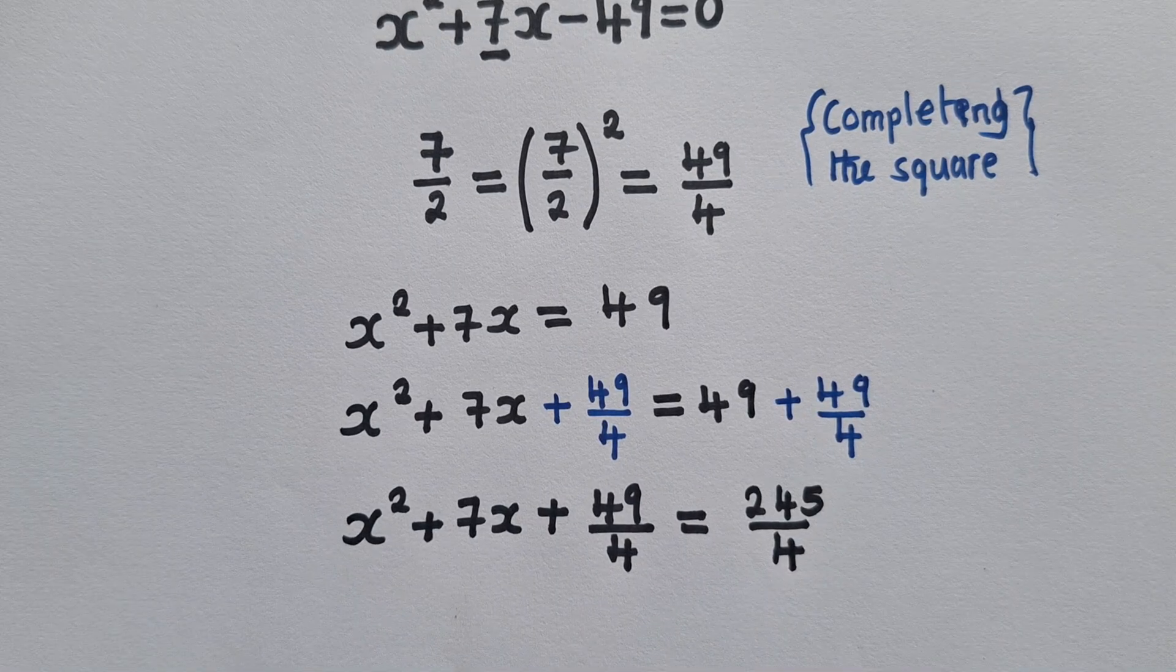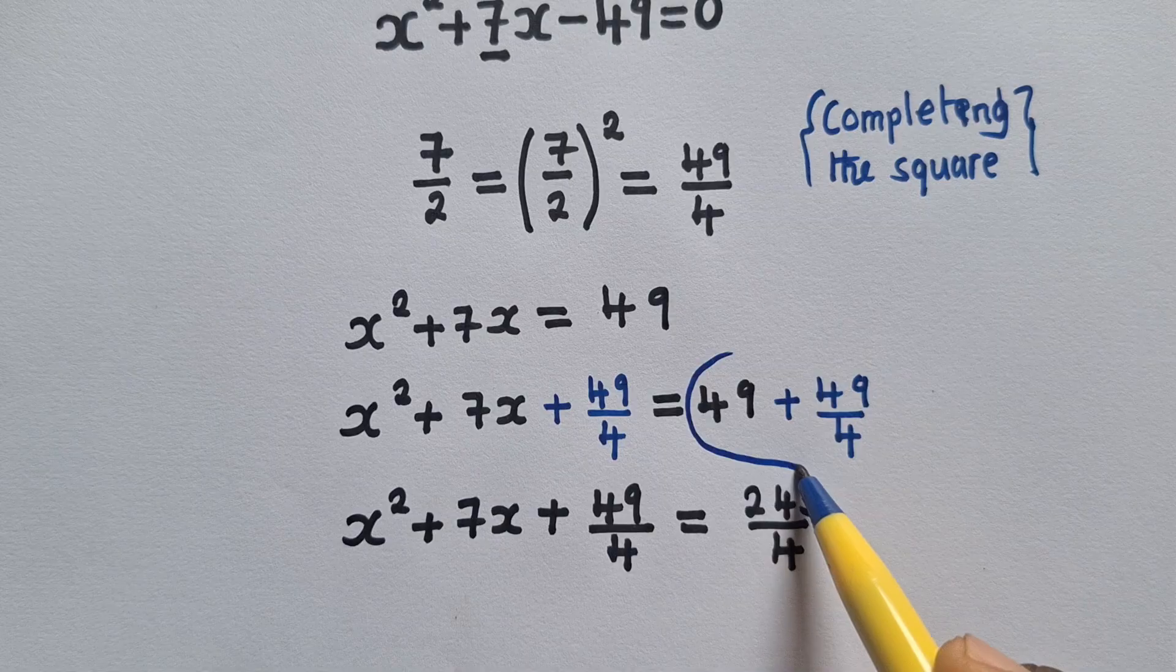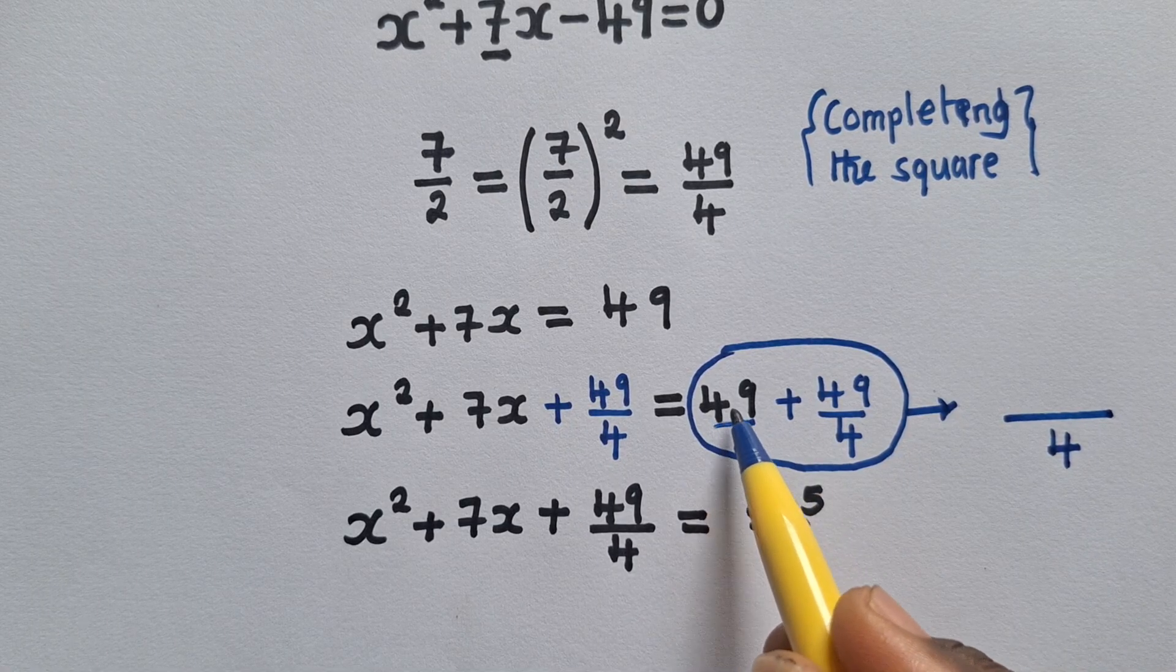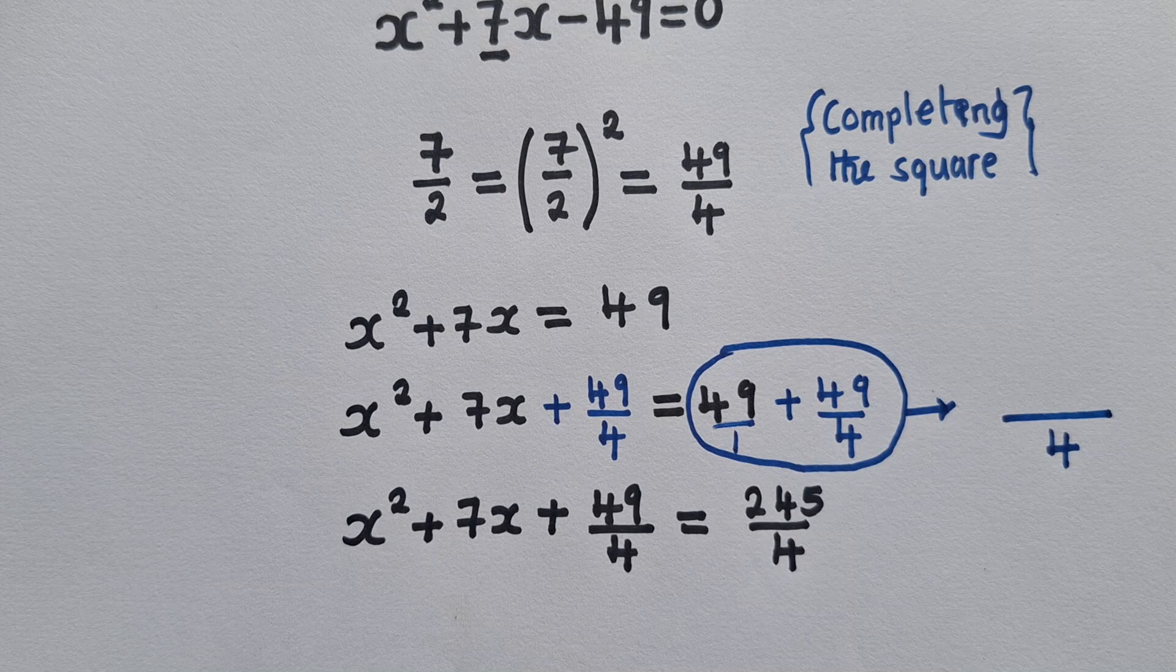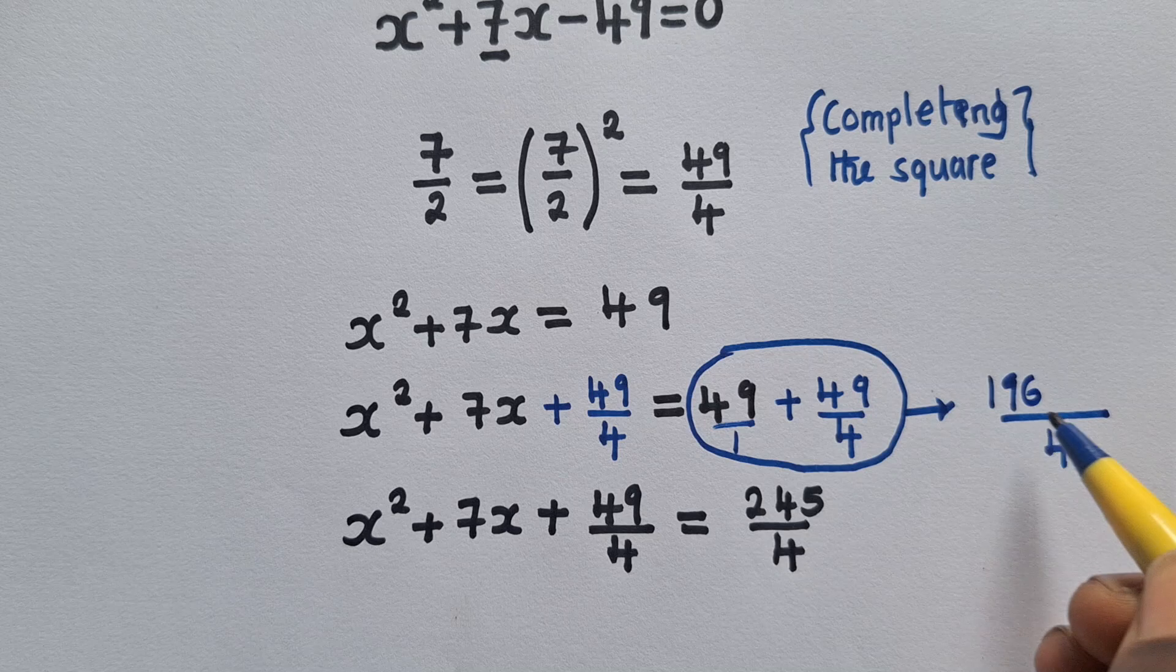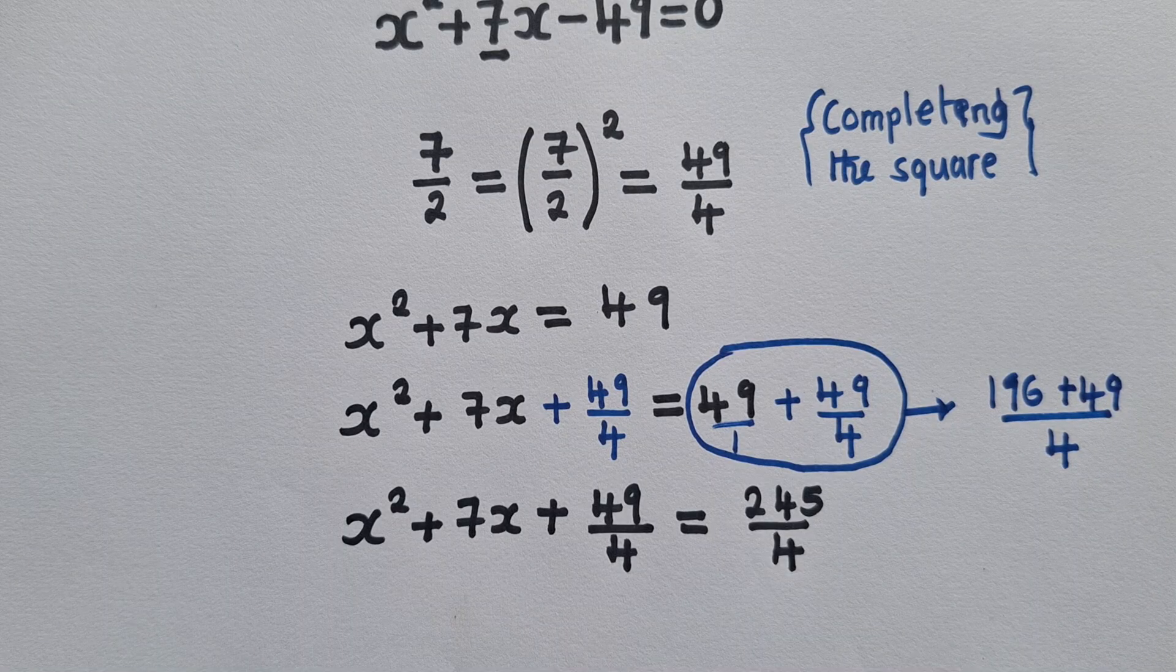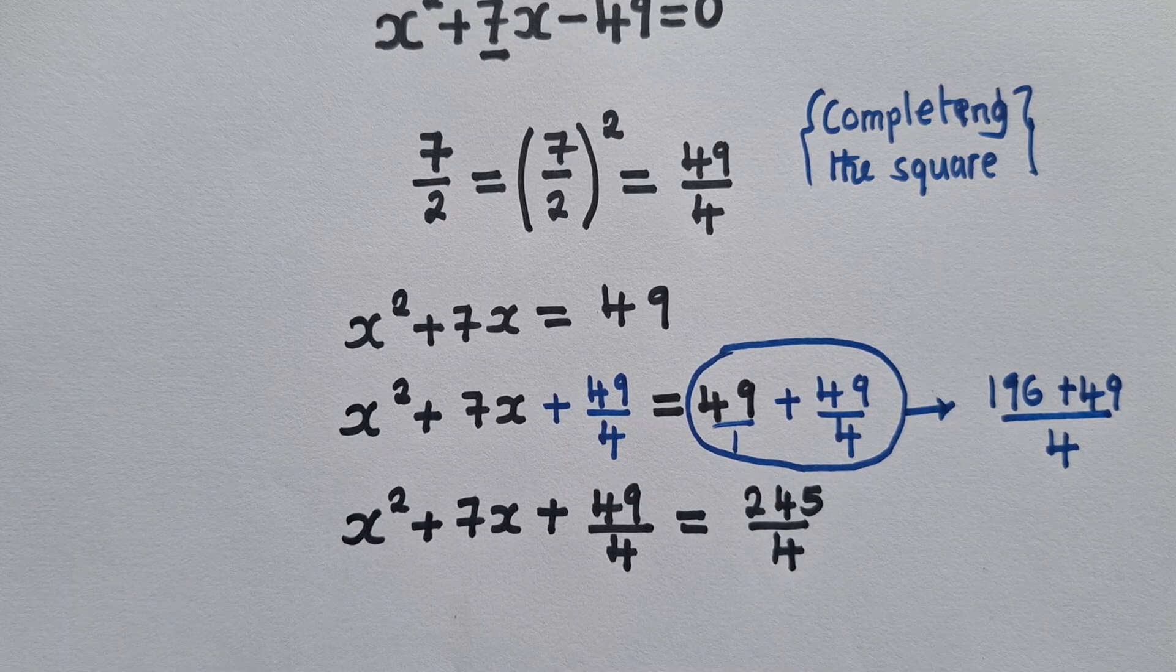So to the people who might be facing difficulties on how to add these two, let me just show you how I did it. I found the lowest common denominator, which is 4. Right down here where there is 49, there is a 1. 1 into 4 is 4, then you say 4 times 49 gives us 196. And here 4 into 4 is 1, 1 times 49, that's 49 plus 49. So when we add 196 plus 49, it's giving us 245.